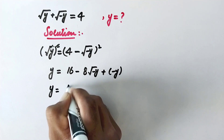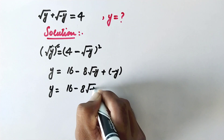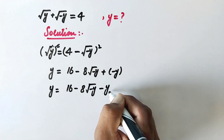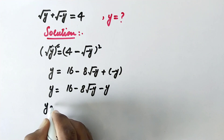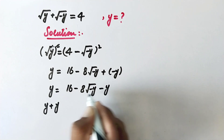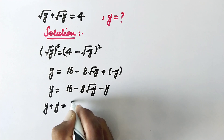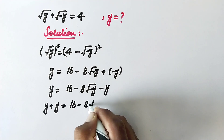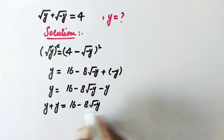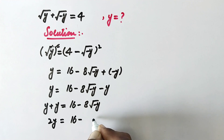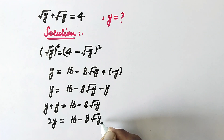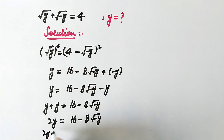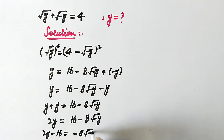By opening this square, here is 16 minus 8 times square root of negative y, plus negative y. So y is equal to 16 minus 8 times square root of negative y minus y. Or here y plus y — this negative y will be positive on the other side — equal to 16 minus 8 times square root of negative y. So 2y minus 16 is equal to negative 8 times square root of negative y.